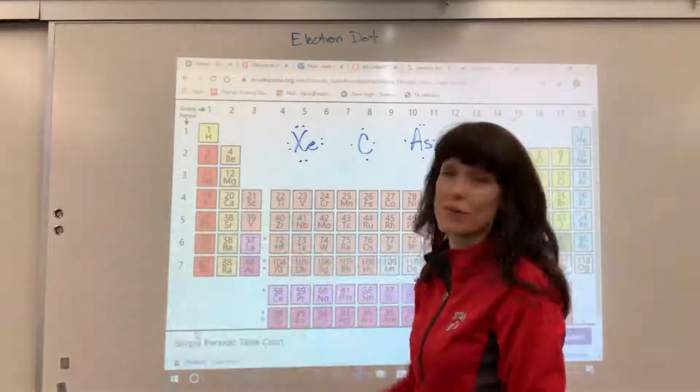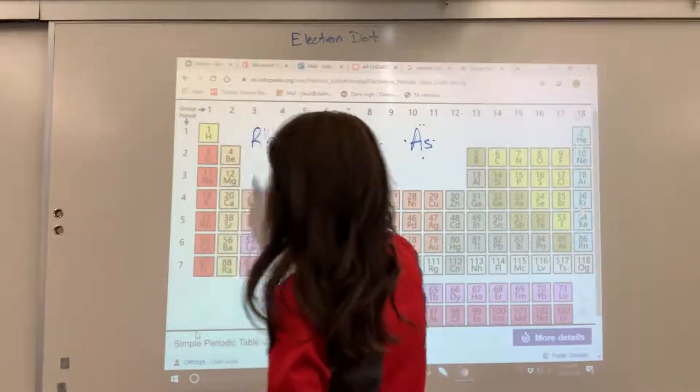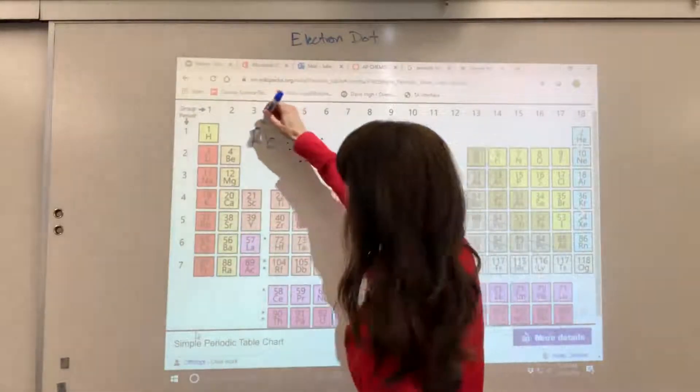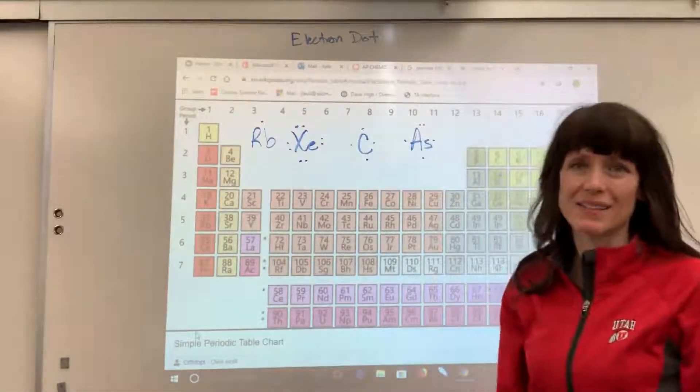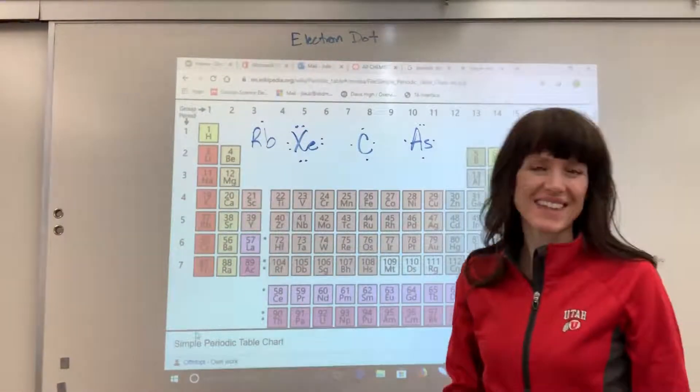Let's do one more. Let's pretend that you have a rubidium. So rubidium, if we're going to do electron dot, we've only got one valence electron. So we put one electron like that. Okay. There you have it. Electron dot is a good start. Have a nice day.